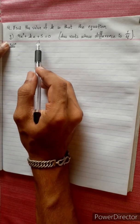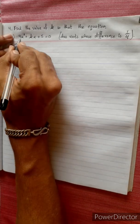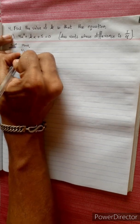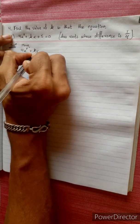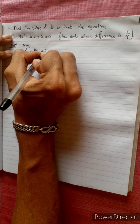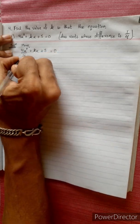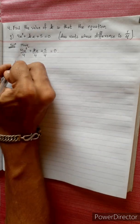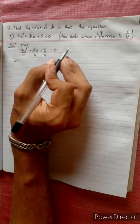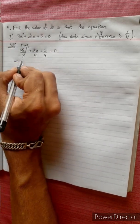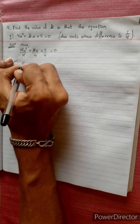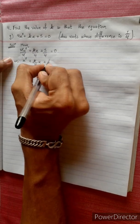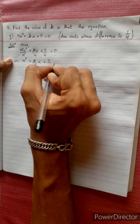So that equation — this equation is simple. The equation is 4x² plus kx plus 5 equal to 0. Divide by 4, divide by 4, divide by 4. It's 0; the 4 cancels.